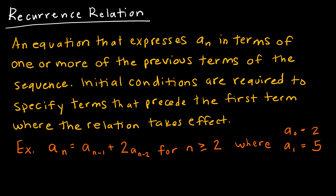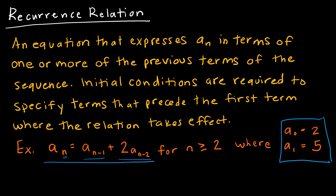It's really important in a recurrence relation that you will be given initial conditions, such as in this case, the first term is two, or a sub zero is two, a sub one is five. This gives us a starting point. The reason I needed two initial conditions here is notice what my function says — to find my new value, I'm going to take the value I had before that, and add two times the value before that.